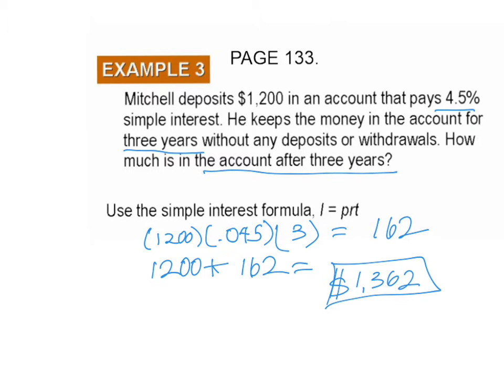But it wants to know how much is in the account after three years. So we have to add it to the original: $1,200 plus $162 equals $1,362. Please get that down in your notebook, and when you're ready, hit play again to proceed with the video.